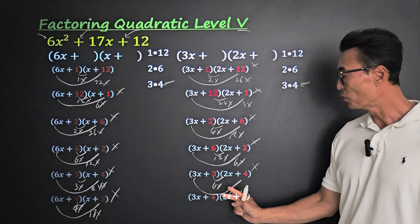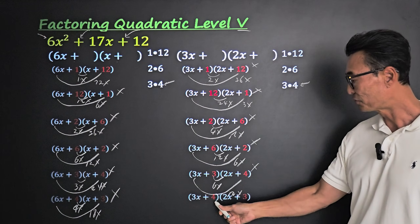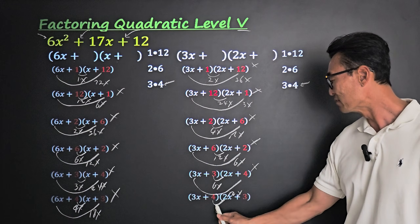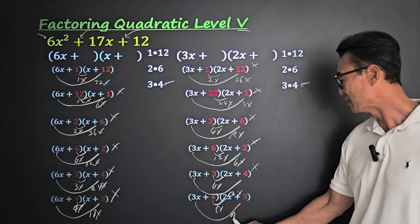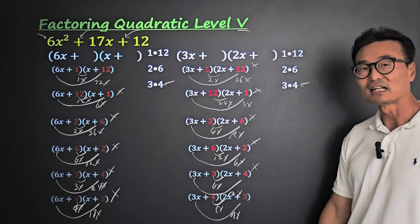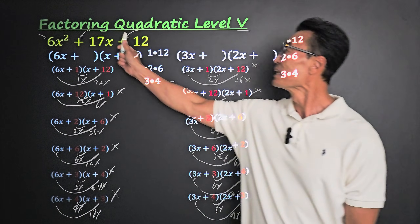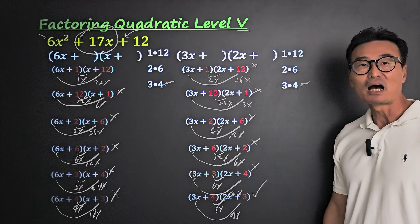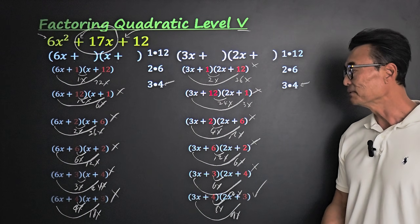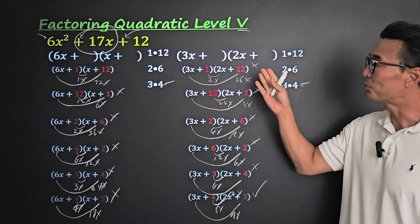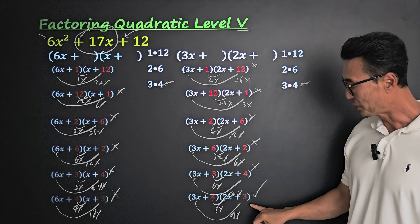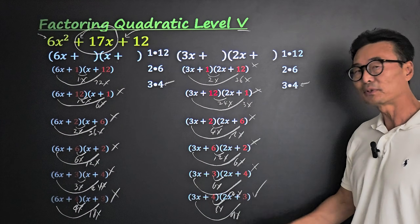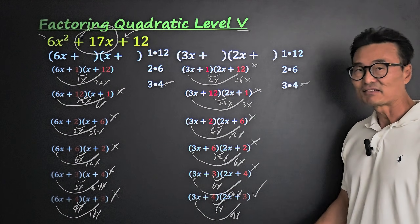Finally, switching to 4 and 3 with 3x and 2x: inner 4 times 2 is 8x, outer 3 times 3 is 9x — and 8 plus 9 is 17, which is exactly what we wanted. So that is our answer. Unfortunately, we had to go through every combination before arriving at the answer, since the correct one turned out to be the last step.